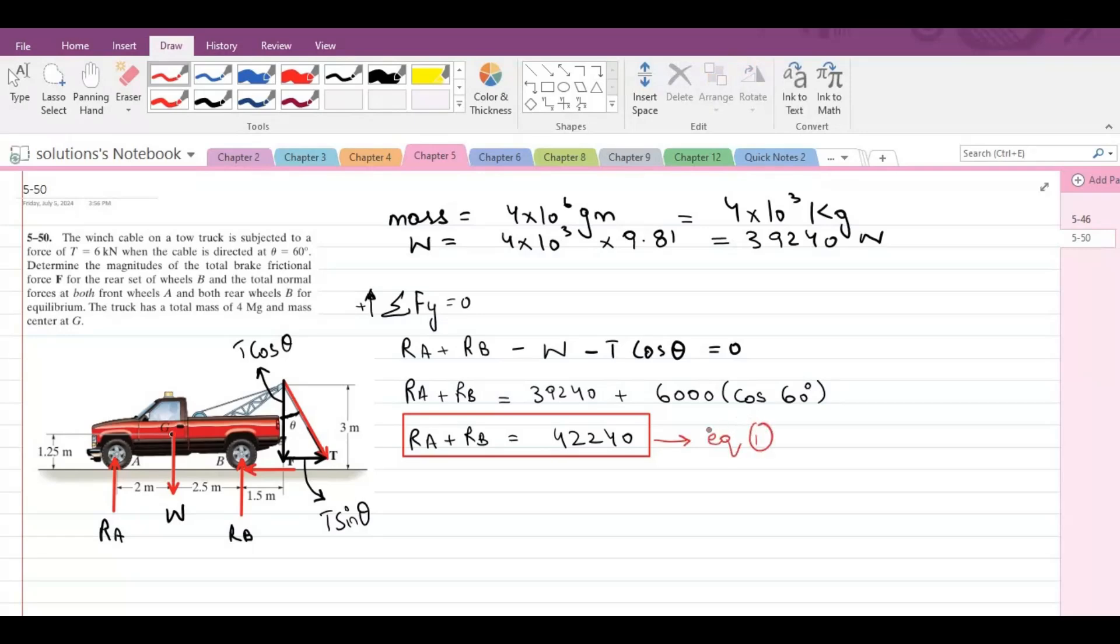Our second equilibrium equation would be summation of forces in x direction equals to 0. I am considering right-hand side as positive. So we have T sin theta minus this frictional force F that is acting in the opposite direction of T sin theta. So from here F is equal to T sin theta which in turns is equal to 6000 sin 60. So from here F comes out to be 5196.15 newtons. So this is our first answer.